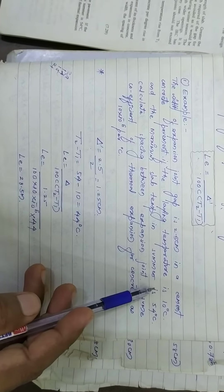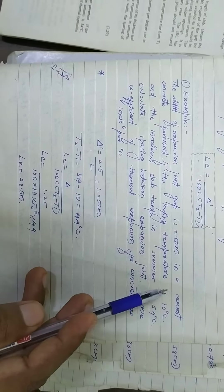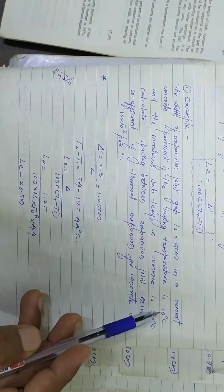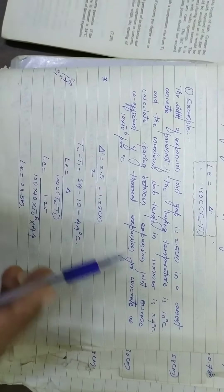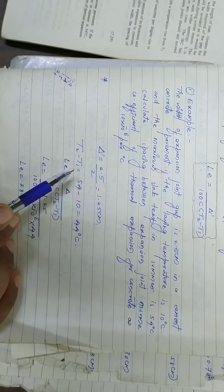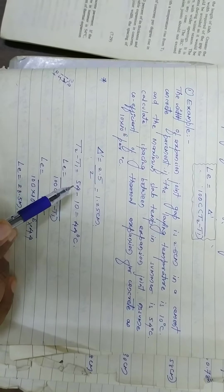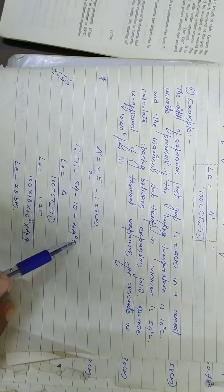Temperature rises from T1 to T2. Here T1 is 10 degree centigrade and T2 is 54 degree centigrade. So T2 minus T1 equals to T is 54 minus 10, which is 44 degree Celsius.